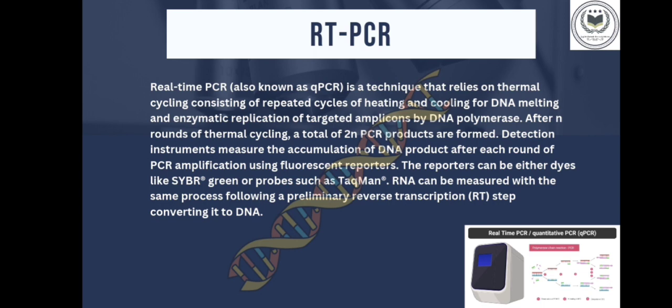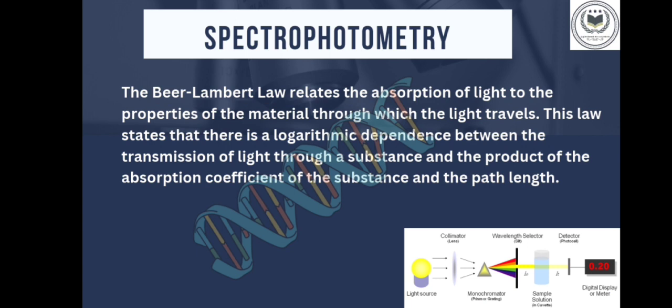Last, spectrophotometry. The Beer-Lambert law relates the absorption of light to the properties of the material through which the light travels. This law states that there is a logarithmic dependence between the transmission of light through a substance and the product of the absorption coefficient of the substance and the path length.